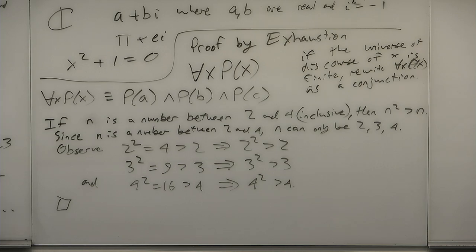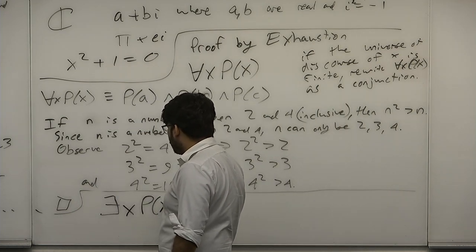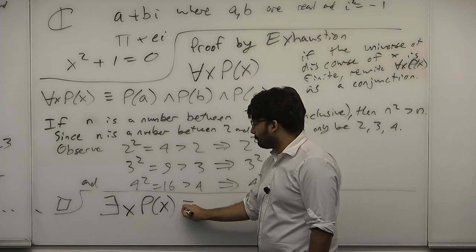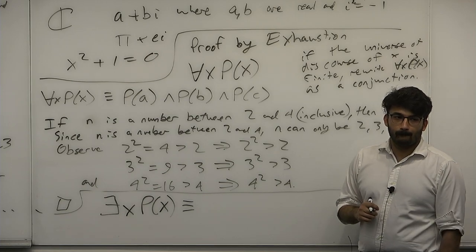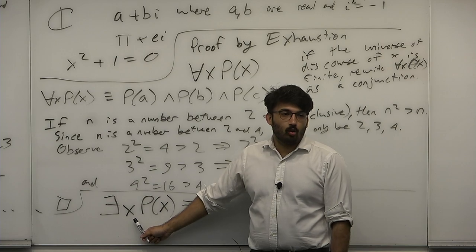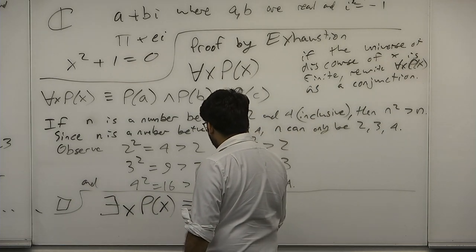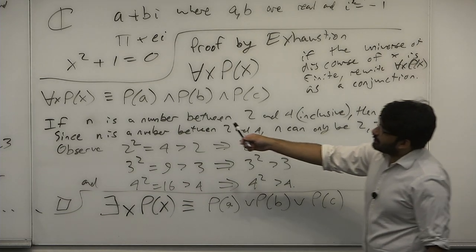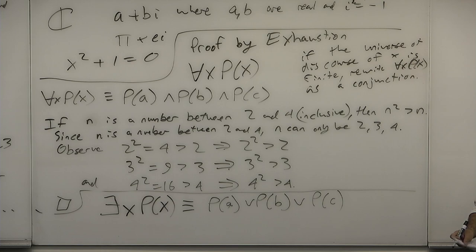Similarly, if you have 'there exists x, P(x)' over a finite universe of discourse, how would you rewrite it without a quantifier? It's an OR: P(a) ∨ P(b) ∨ P(c). In some sense, the 'for all' quantifier lets you do an infinite AND, and 'there exists' lets you do an infinite OR.